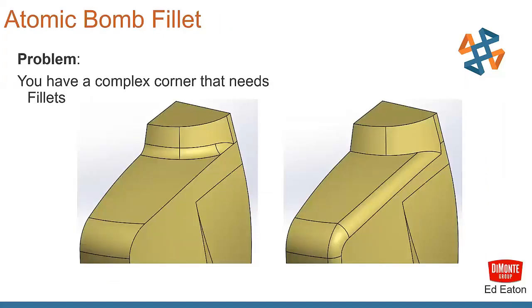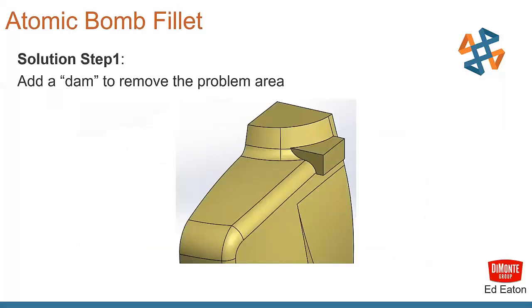Probably the last one that we get to here before we jump into questions. This is another one that comes from Ed Eaton. He calls this one an atomic bomb fillet. And we have a complex corner that needs fillets. So when we look at this, we got two radiuses there left and right. Those are the two radiuses that we want. We want those to come together in a nice, clean blend. So how do we end up creating this?